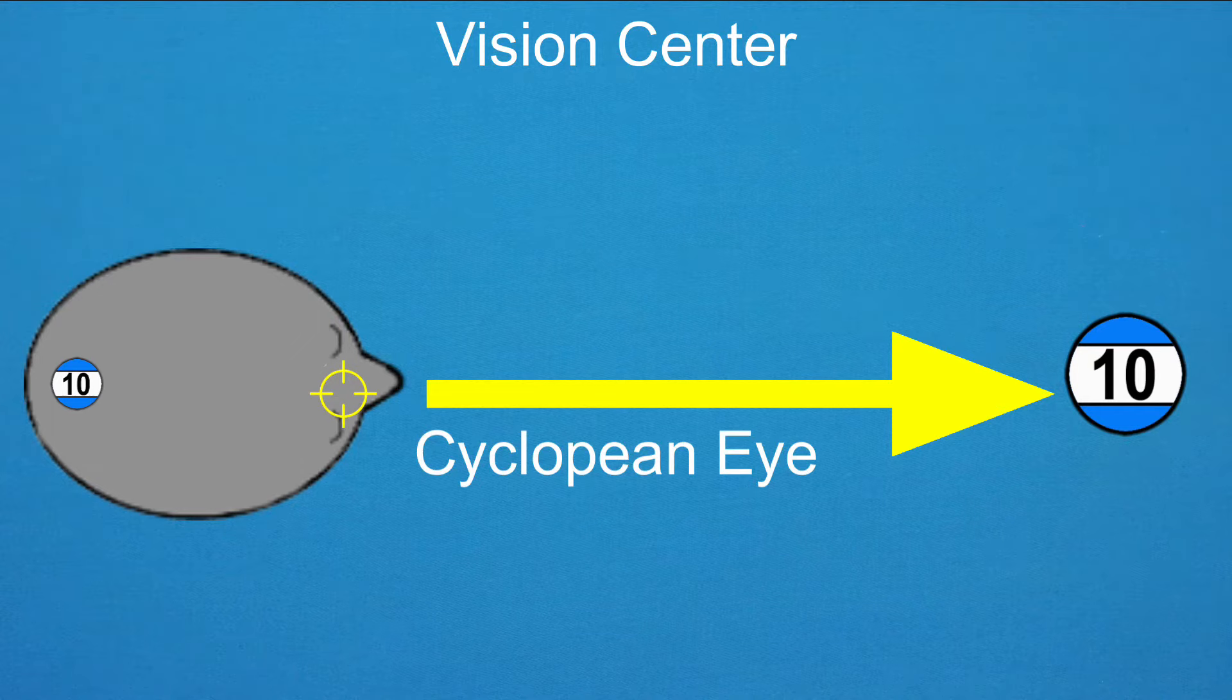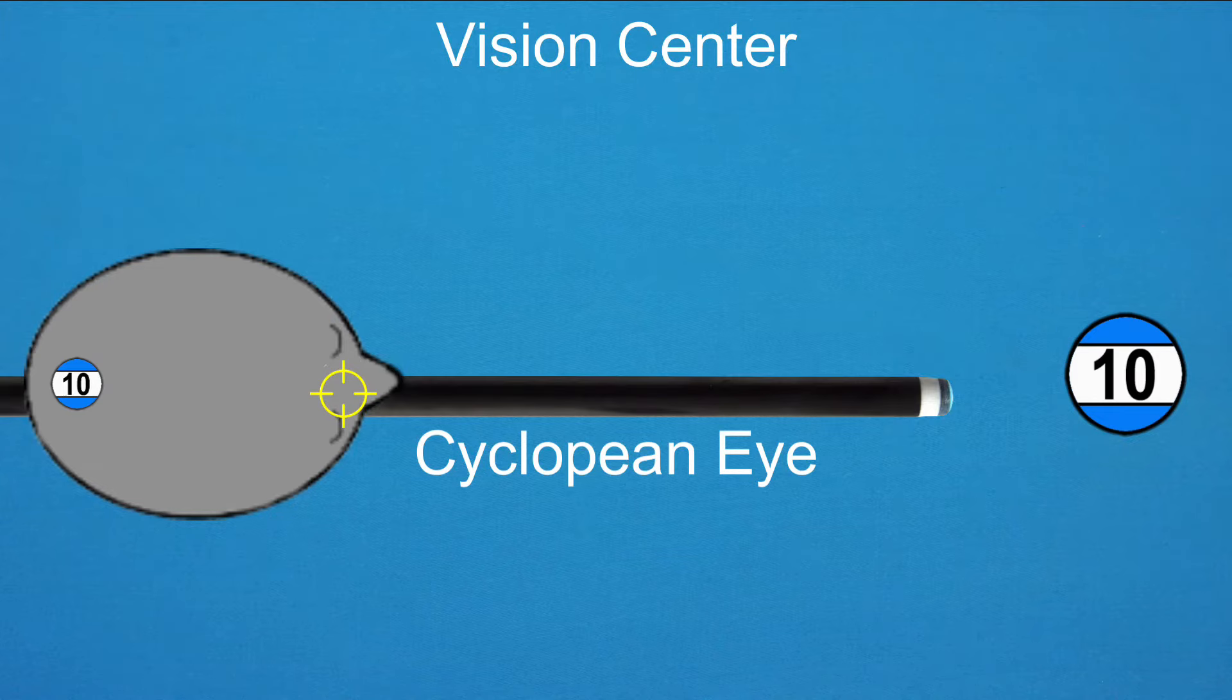This is the center of your vision, usually but not always located closer to the dominant eye. As pool players, our goal is to place our vision center directly over our cue stick, to have the best chance of delivering the cue straight at the aiming point.